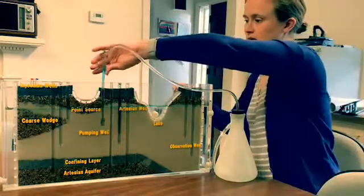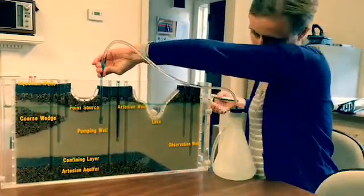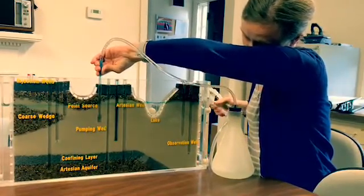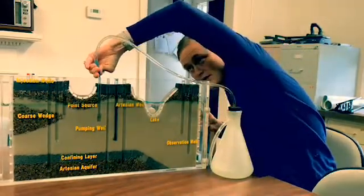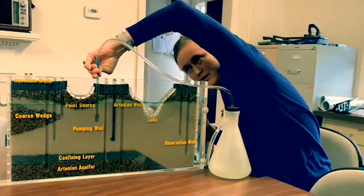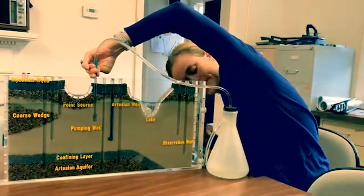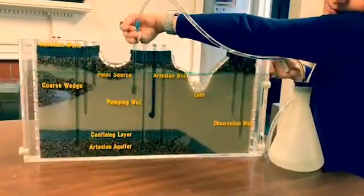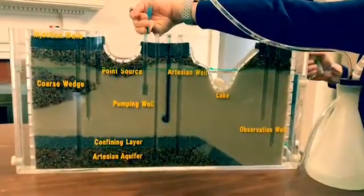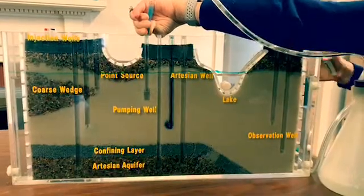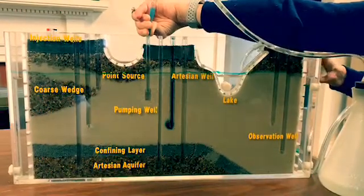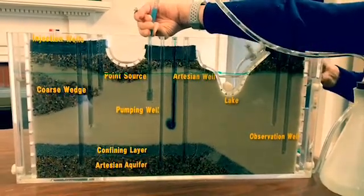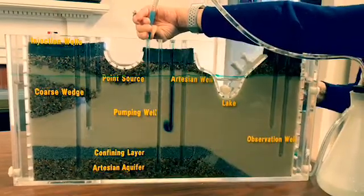Now I'm going to start pumping this well right here and I want you all to watch the food coloring. The water is pumping out into the container and you can see that the food coloring I put in to trace where the water is moving is being pulled towards the well that we're pumping. I am changing the direction that groundwater might be flowing and pulling water towards it.